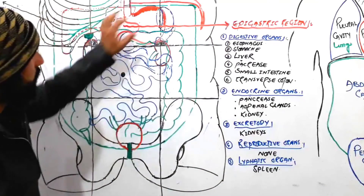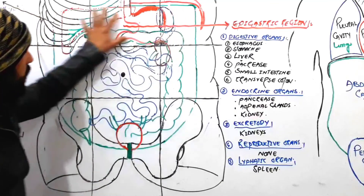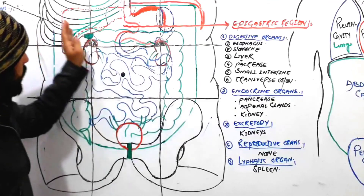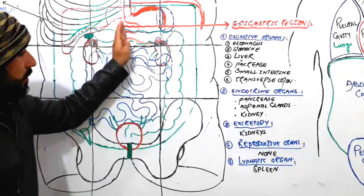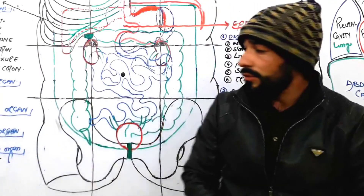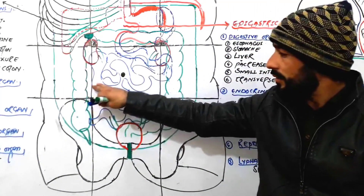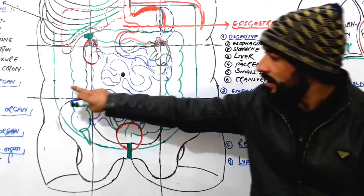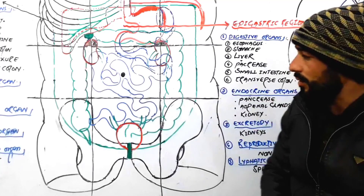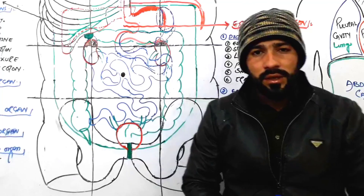So these were the five groups of organs found in the epigastric region. We have now covered the upper three regions of the abdomen: the right hypochondric, the epigastric, and the left hypochondric region. Next, we will move to the middle three regions of the abdomen to discuss what organs are found there. See you in the next lecture — till then, Allah Hafiz.